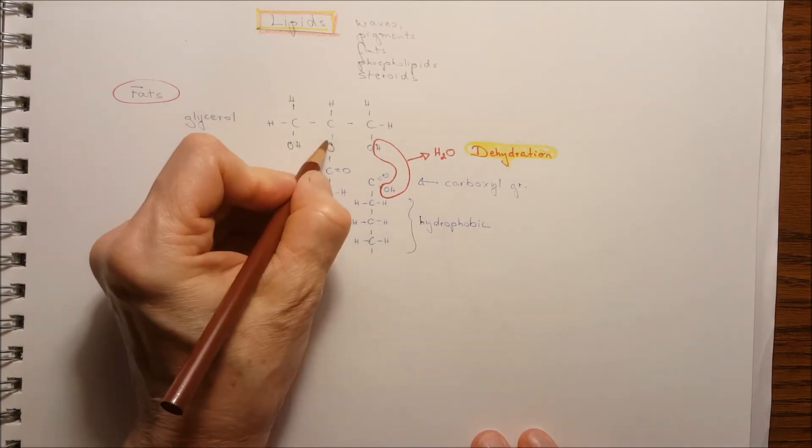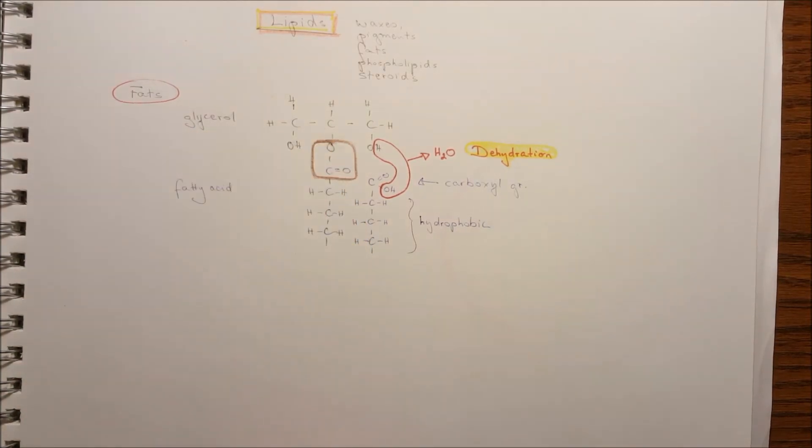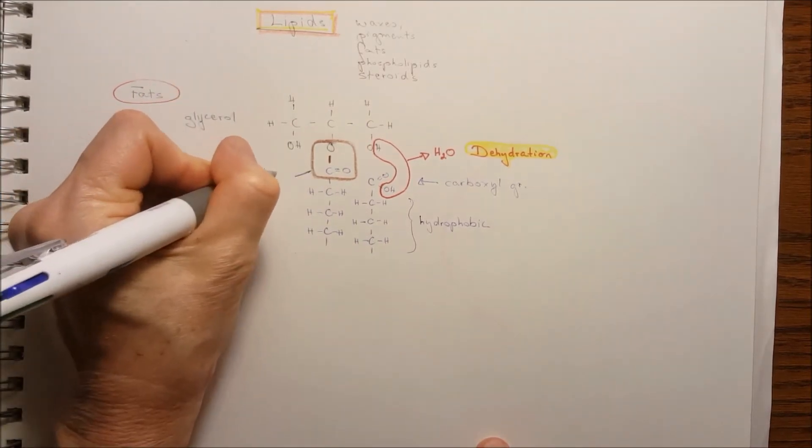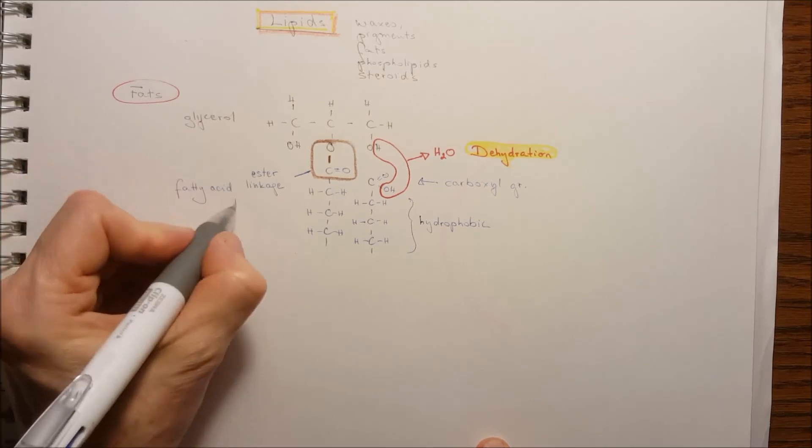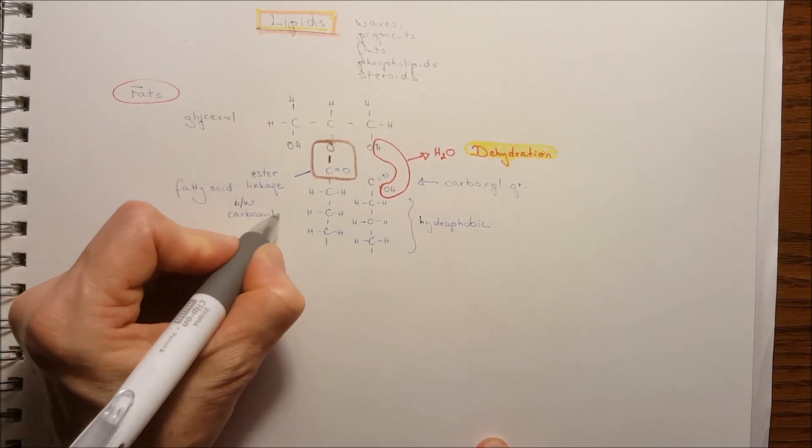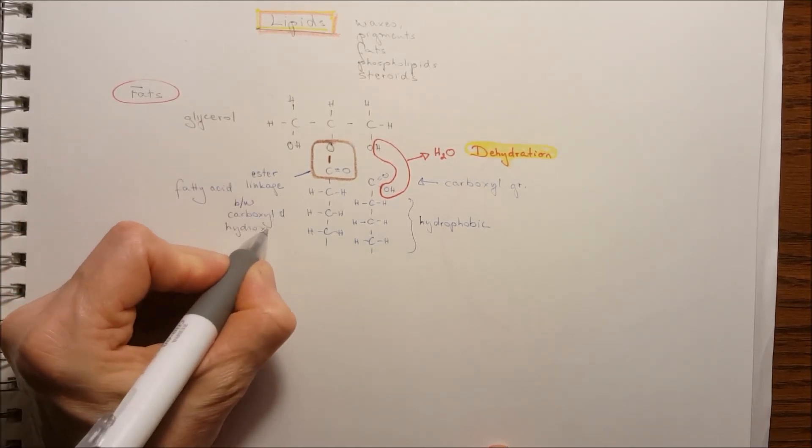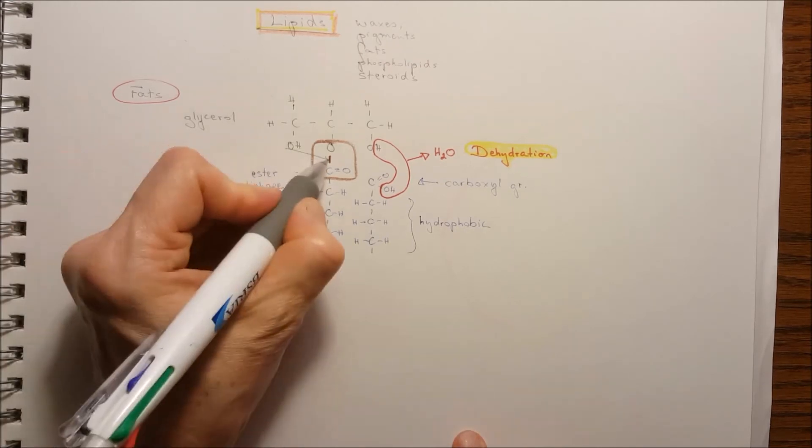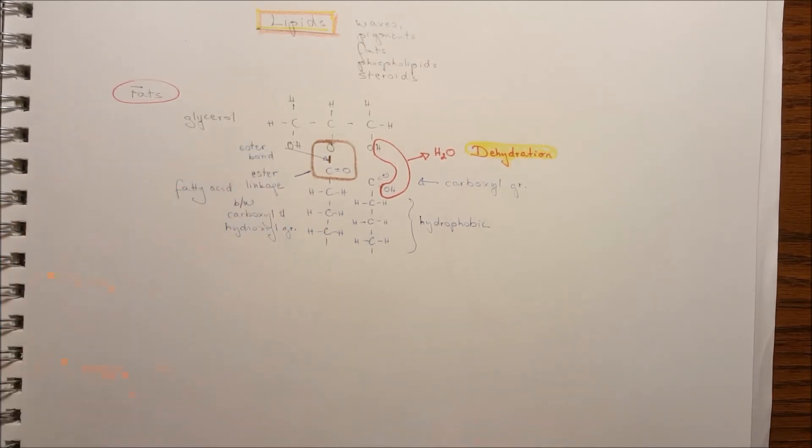And here the hydroxyl group and the carboxyl group now just formed the ester linkage. And between the oxygen and carbon is the ester bond. That is the ester bond.